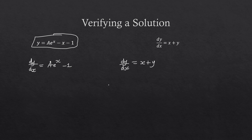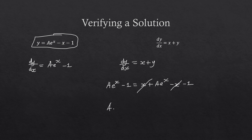I know what dy/dx is — it's going to be ae to the power of x minus 1. I can place x here, and my y is this function, so I'm going to have plus ae to the x minus x minus 1. We can see those cancel out, so you get ae to the x minus 1 equals ae to the x minus 1. So the left-hand side is equal to the right-hand side. That's how you verify this particular solution.